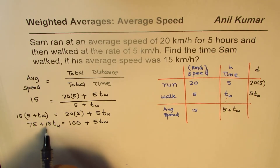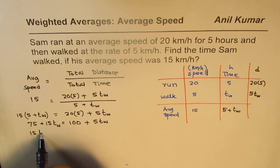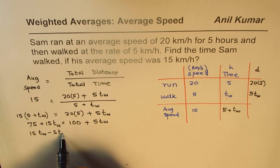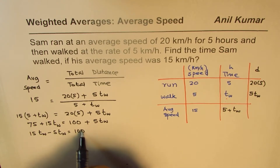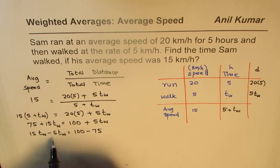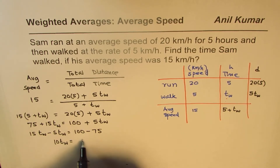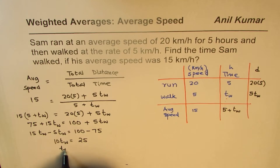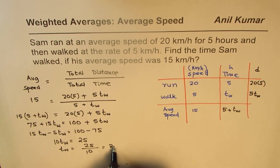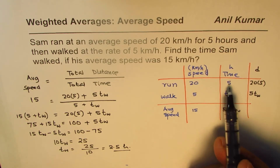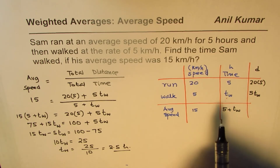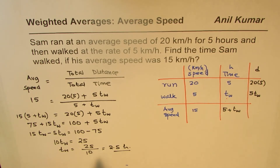We bring the variables to one side: 15 times T_walking minus 5 times T_walking equals 100 minus 75. That gives us 10 times T_walking equals 25, so T_walking equals 25 divided by 10, which is 2.5 hours. So the time to walk is 2.5 hours — half of the five hours spent running.